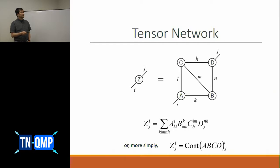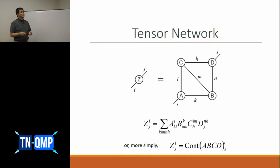This index of tensor A is contracted with an index of tensor C. So A has a little index L here, and C has a little index L here — you contract these indices. If you look at this kind of formula, it's not immediately clear which index is contracted with which. So it's much simpler, much clearer, and much more understandable in the diagrammatic way.